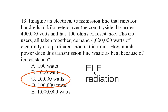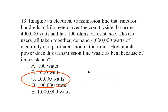Those fields are going to interact with counter fields set up in the earth and any obstructions nearby, increasing the loss. So in fact we will see a little more than 10,000 watts of power lost between the transmitting station and the end users. But as a result of 100 ohms of resistance, we lose 10,000 watts of power in this transmission line — and that is choice C.